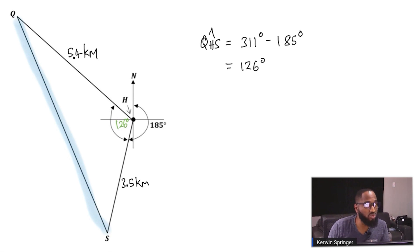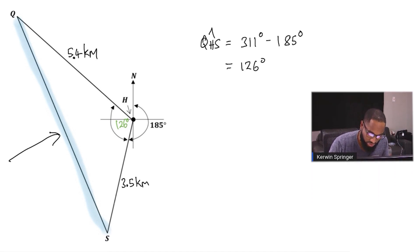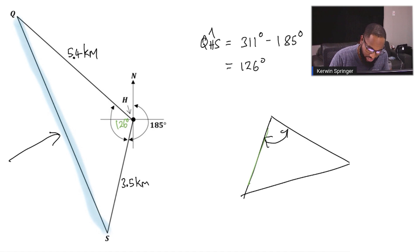If we need to find side QS, which is for two marks, what rule are we going to use? A clue is anytime you have these lengths and you have the angle in between and they ask about this side, that's cosine rule. Classic cosine rule.